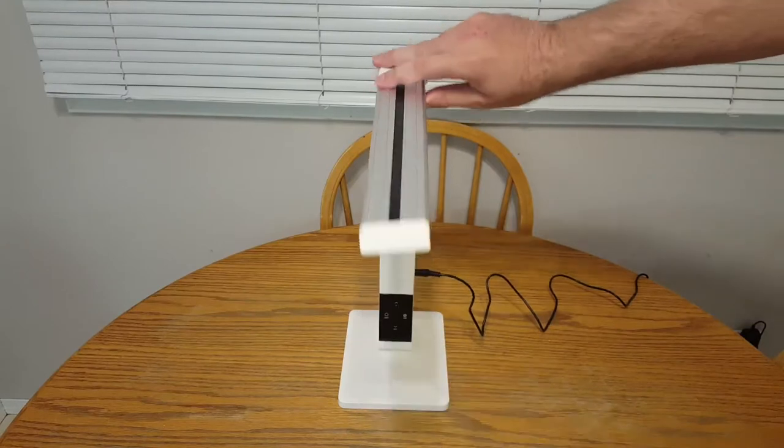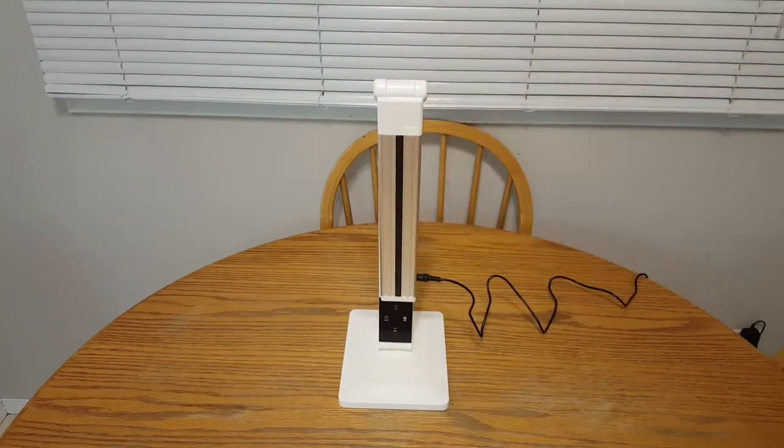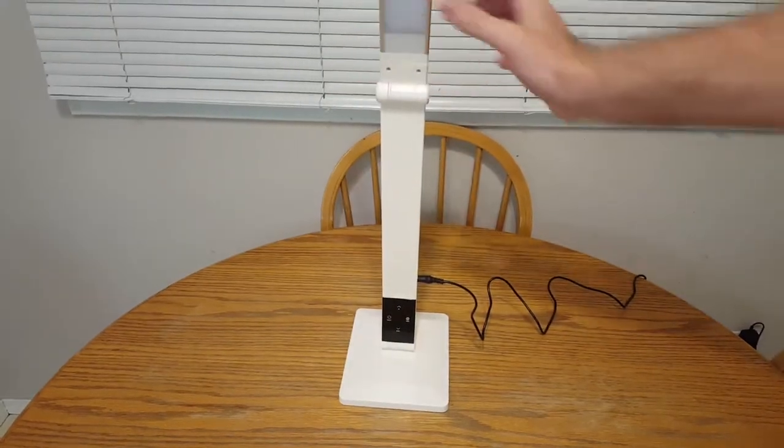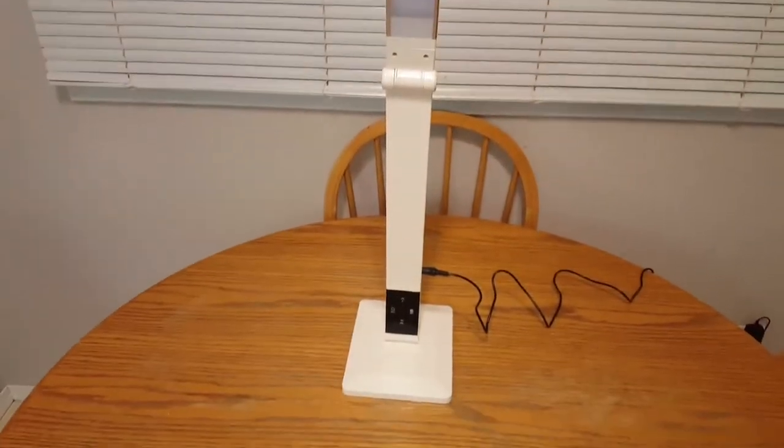There's a hinge just below that that moves, a hinge at the very bottom below the black control panel, and then the base itself where the lamp clipped into it can rotate a little bit as well.